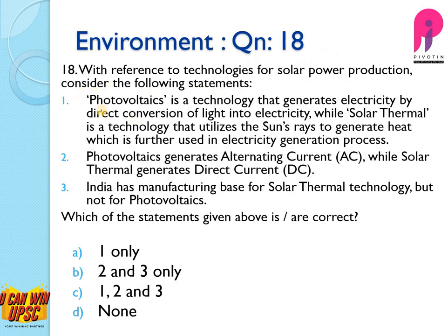Question 18: With reference to technologies for solar power production, consider the following statements. Statement 1: Photovoltaics is a technology that generates electricity by direct conversion of light into electricity, while solar thermal is a technology that utilizes the sun's rays to generate heat, which is further used in electricity generation. Yes, this is correct — photovoltaics convert light to electricity without converting it to heat first, whereas solar thermal converts solar energy to heat and then to electricity.